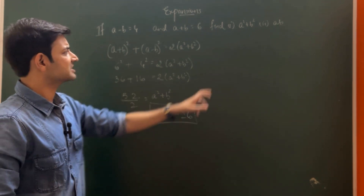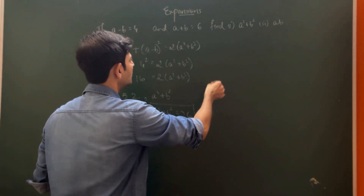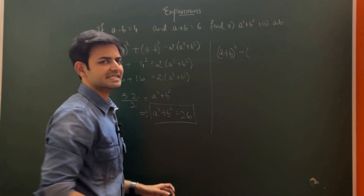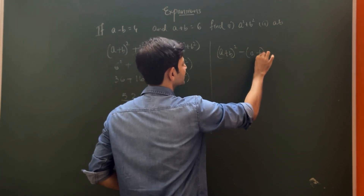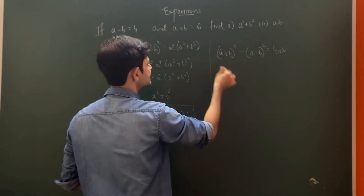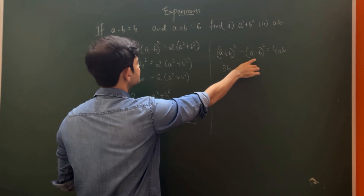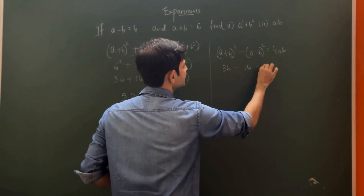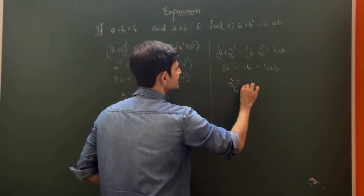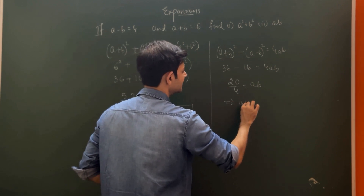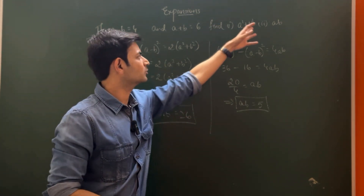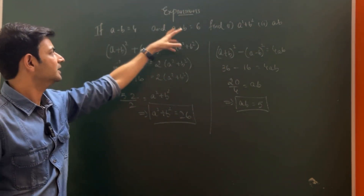In the second part, we find ab using the formula (a + b)² - (a - b)² = 4ab. Substituting: 36 - 16 = 20 = 4ab, so ab = 20/4 = 5. This is how we apply different formulas based on different quantities given in the question.